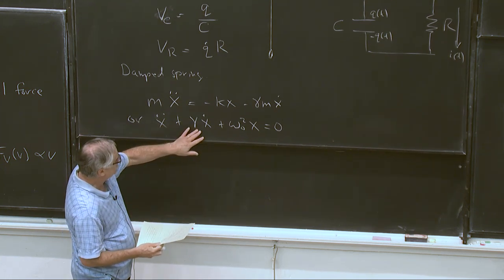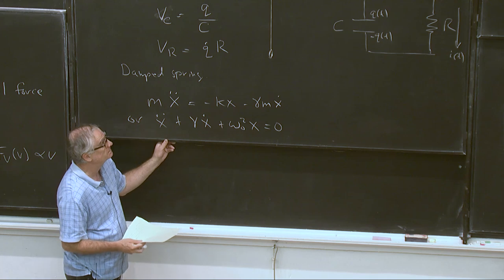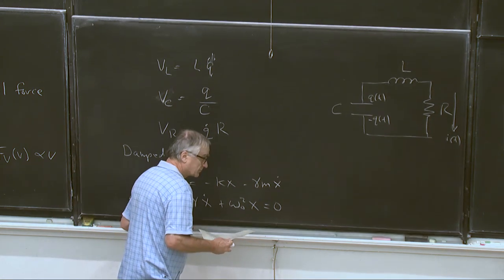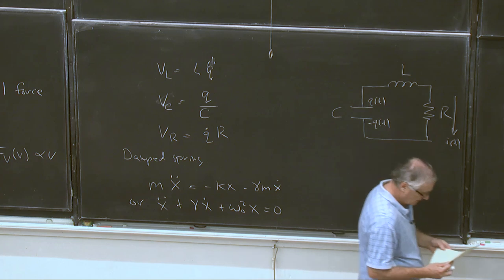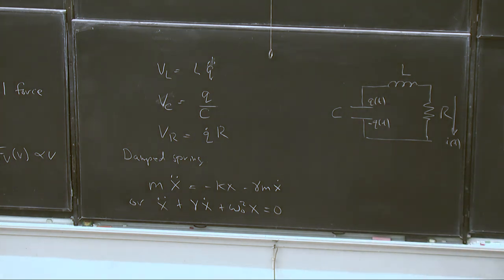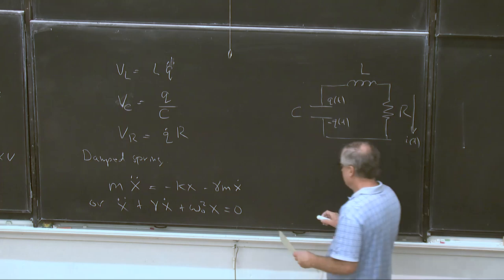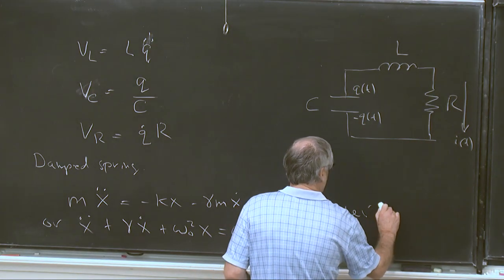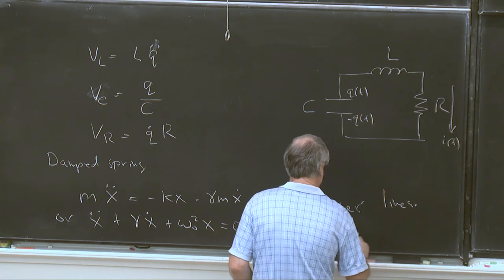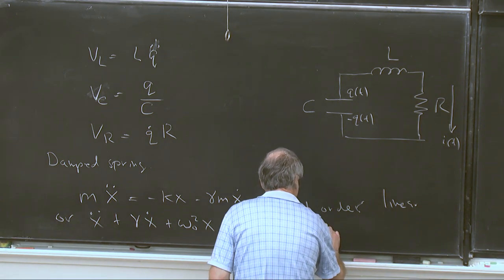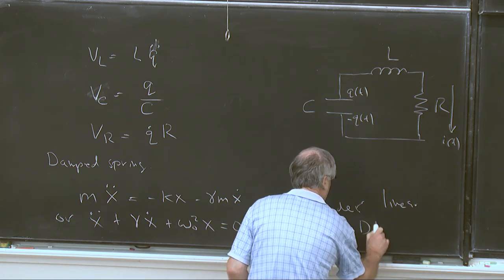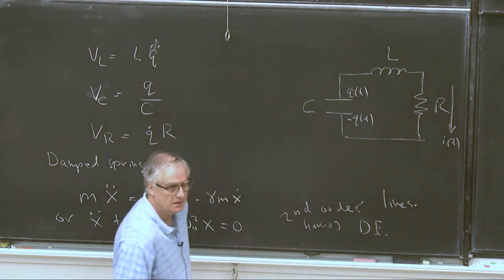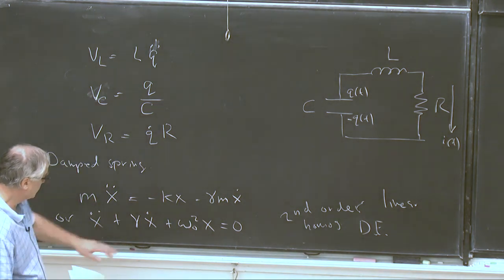Or I could write this as x double dot plus gamma x dot plus omega naught squared x is equal to zero. So if gamma was zero, we'd recover our earlier equation. What is this? Well, it's still a second-order linear homogeneous differential equation. Second-order linear homogeneous differential equation.